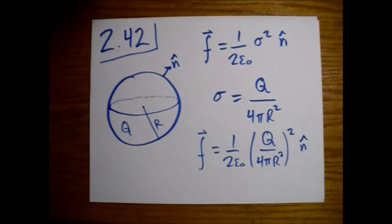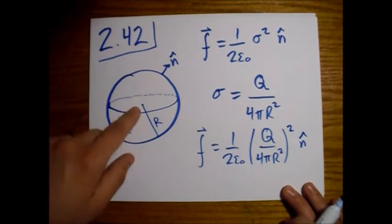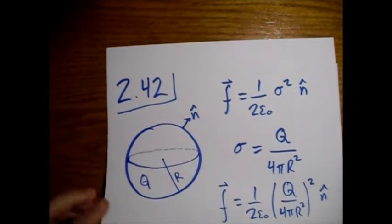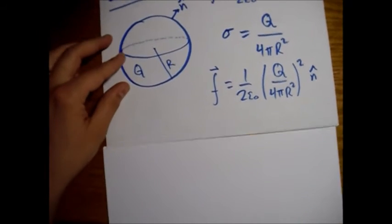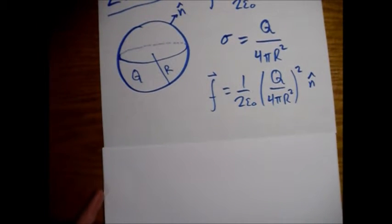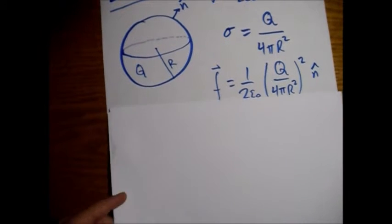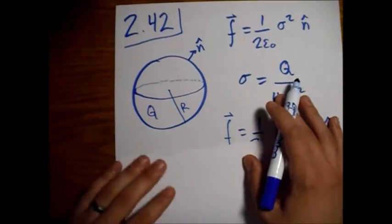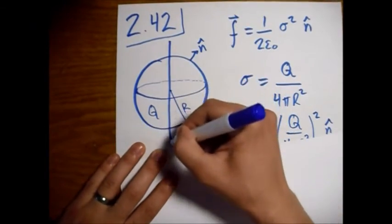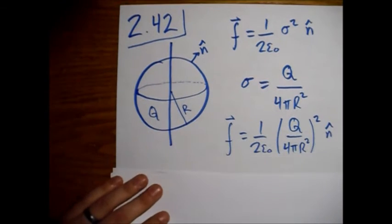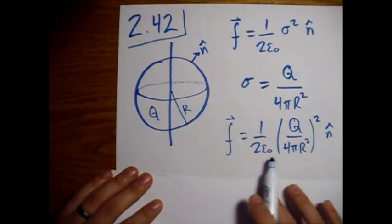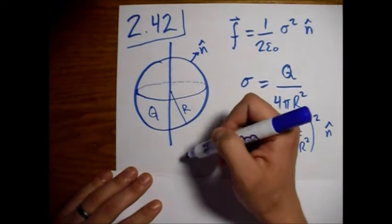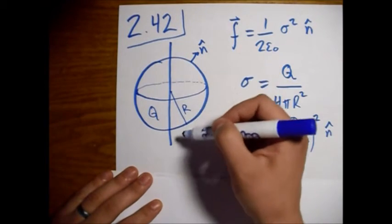All right, so now what we want to do is find the total force of repulsion between this northern hemisphere and the southern hemisphere. You can go through a big nasty integration. But what we find is, once you divide this problem and you're only looking at the symmetry this way, basically what we're doing is if we were to integrate over this whole surface, this force per unit area.